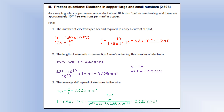Alternatively, we could use what I call the INAV equation, with the drift speed being V. We know what the current is. We know the free electron density, converted into free electrons per metre cubed, which is what we need. The cross-sectional area is in metres squared, and we know the charge of an electron, and we get exactly the same answer.